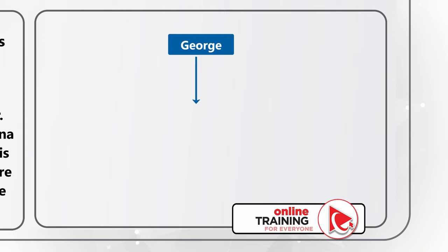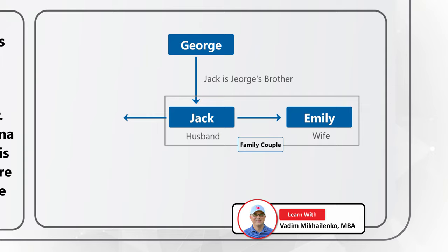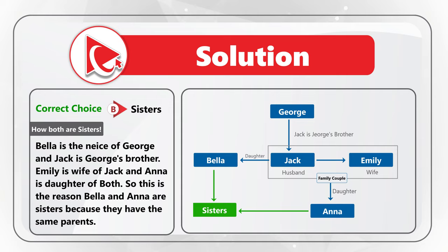Jack also has a wife, Emily, and Jack and Emily are a family couple. We also know that Bella is the daughter of George's brother, which means Bella is the daughter of Jack and Emily. We also learned that Anna is the daughter of Emily, which means Anna is the daughter of Jack and Emily — which means that Bella and Anna are sisters. Do you have a better way to solve this challenge? Please make sure to post in comments.